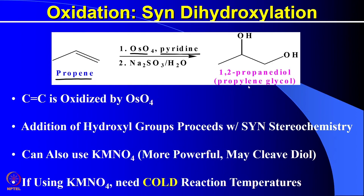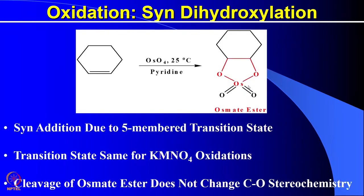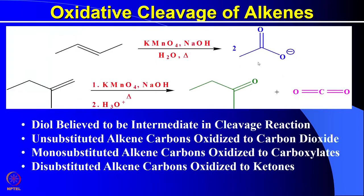When using potassium permanganate as the oxidizing agent, one should use very low temperature or cold reaction conditions. The mechanism of osmium tetraoxide oxidation proceeds by initially forming a cyclic osmate ester, where the C-O bonds are in the syn orientation — it is a syn addition due to the five-membered transition state. This transition state is the same or similar for potassium permanganate as well. Cleavage of the osmate ester does not change the stereochemistry of those two C-O bonds, hence it gives a syn diol or cis diol.